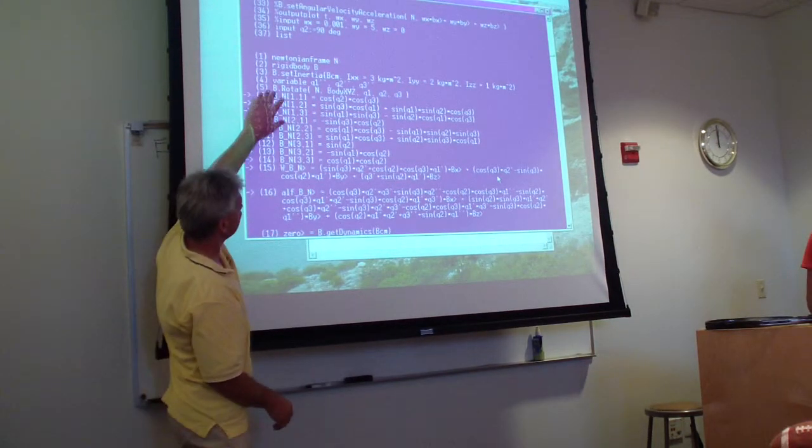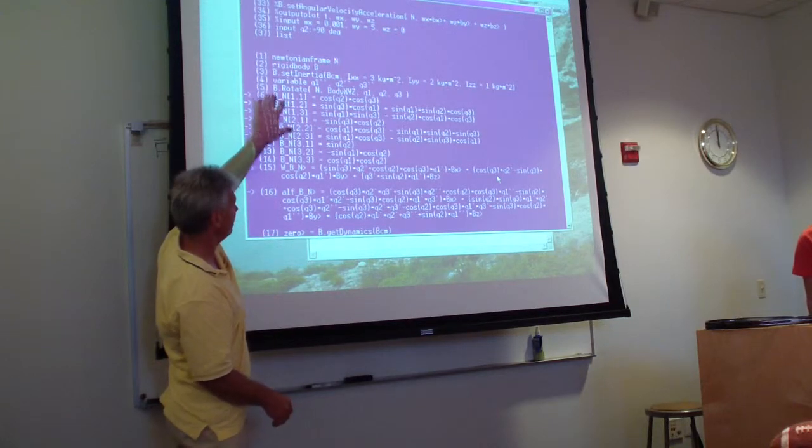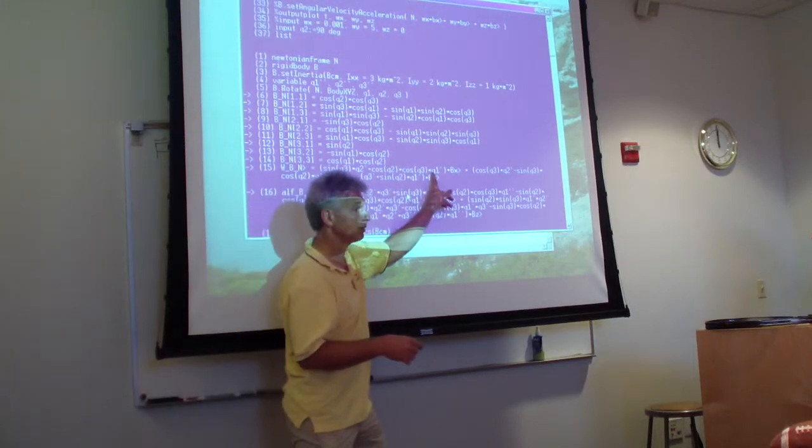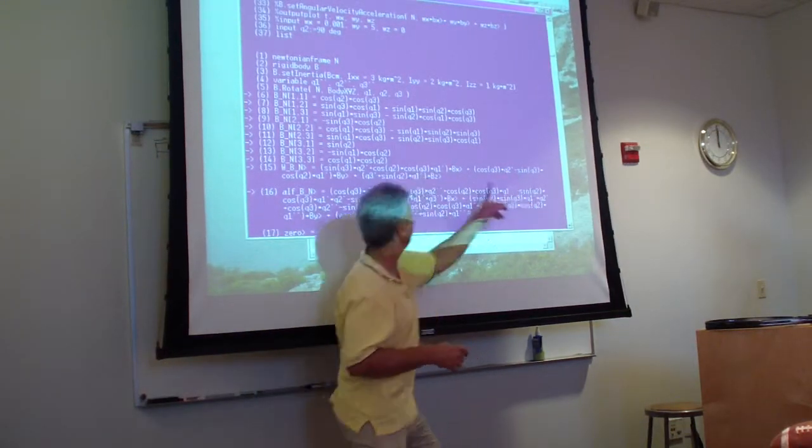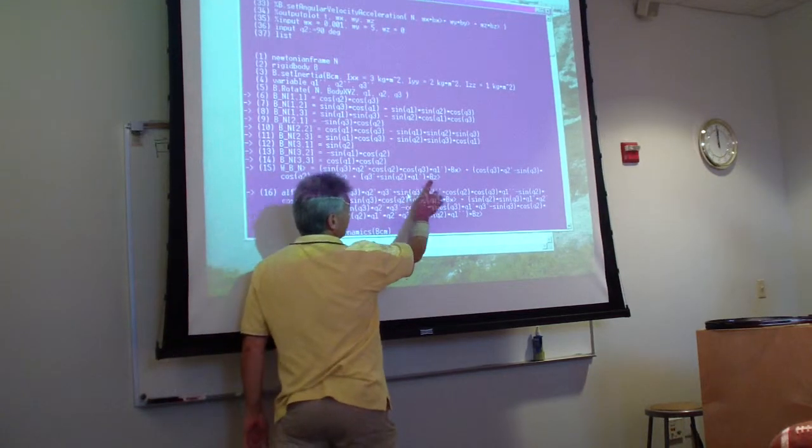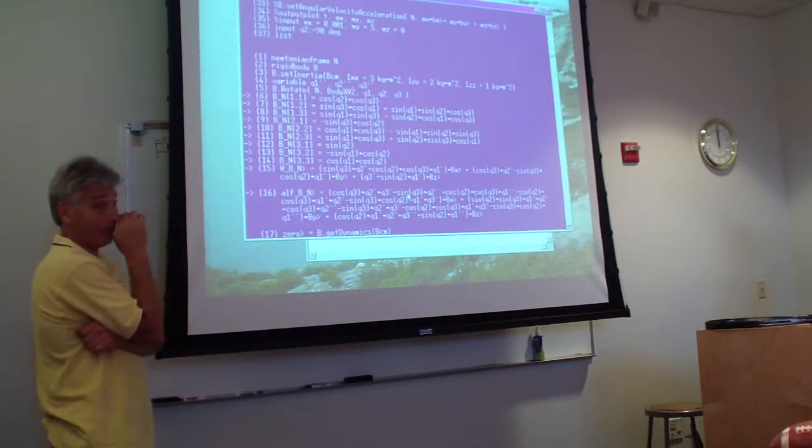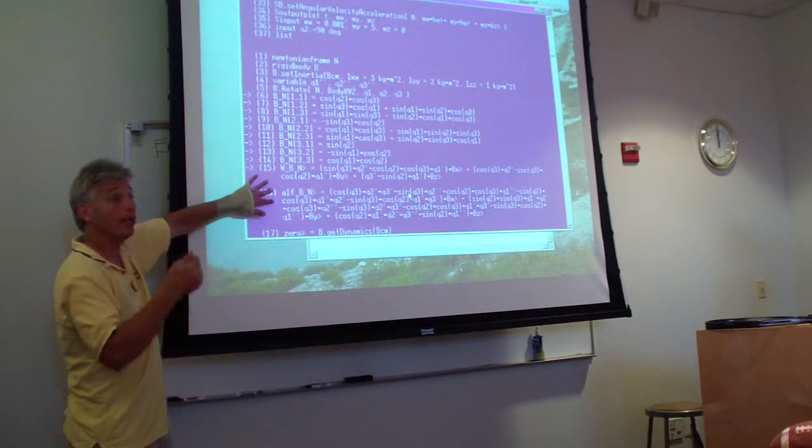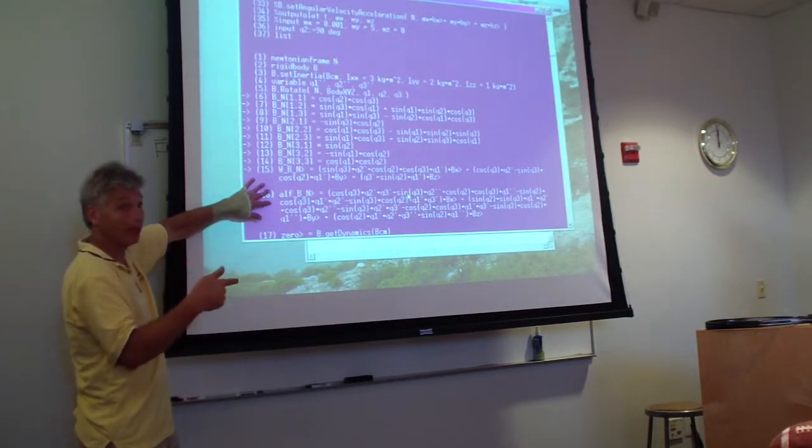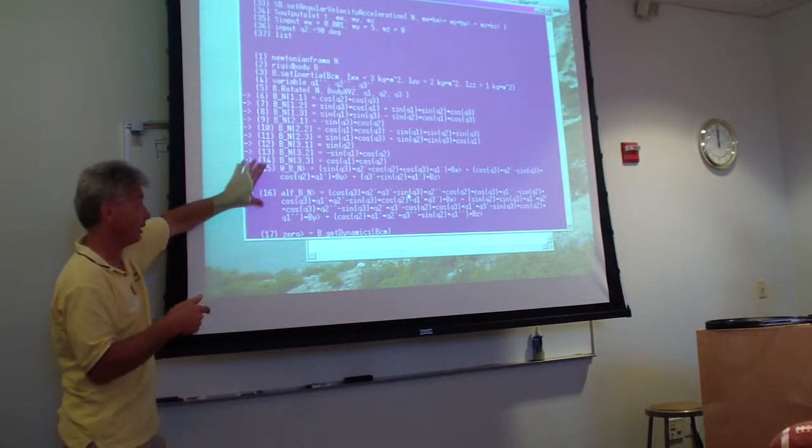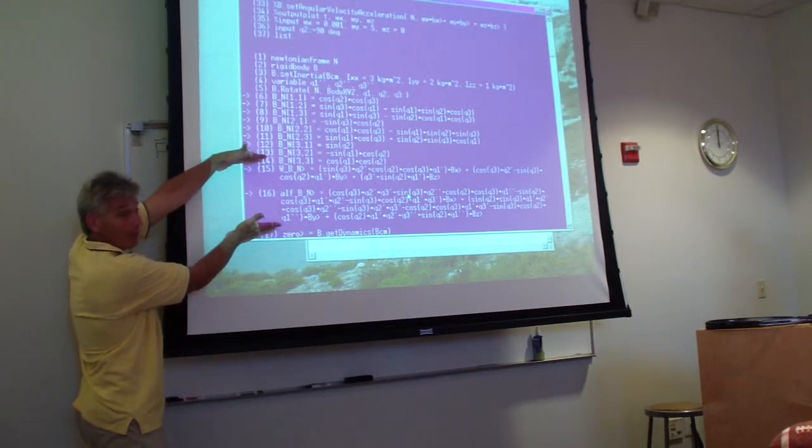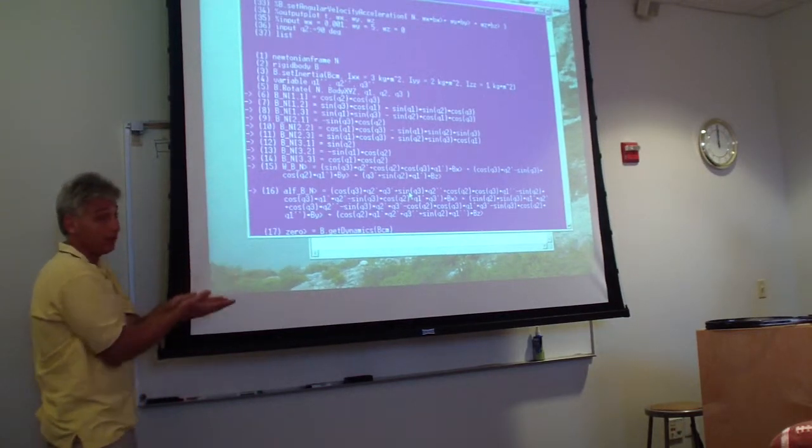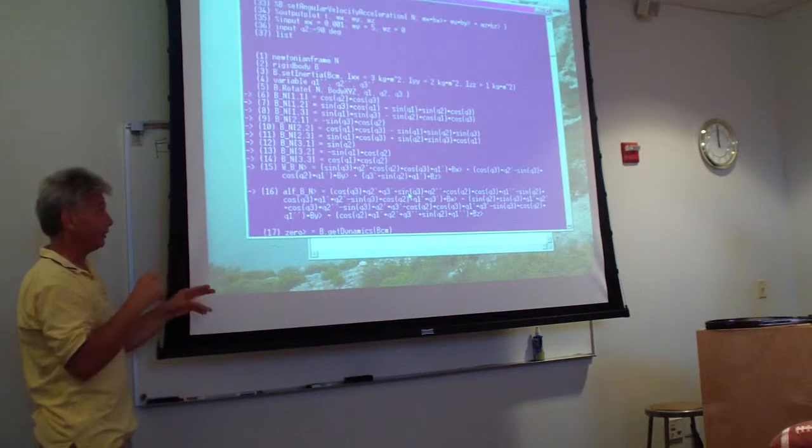So here is how the rotation matrix ends up, and more importantly, here's omega-b and n. Now it used to be omega-b and n was omega-x bx, plus omega-y by, plus omega-z bz. So that's what was there before. That was so much simpler, and alpha used to be omega-x prime bx, plus omega-y prime by, plus omega-z prime bz. So right over here, you sort of see, I'm already paying this enormous cost by using angles.